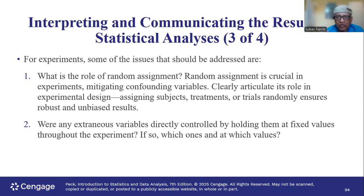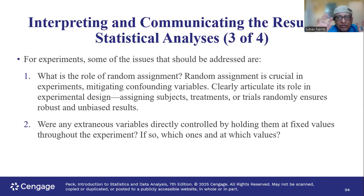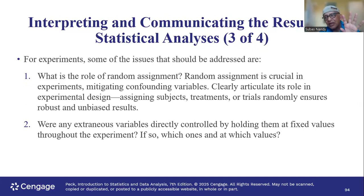We do not follow an order in assigning the subjects. We should randomly assign the volunteers — the participants — into the two groups. One group takes the actual medicine; the other group takes the control or a placebo.